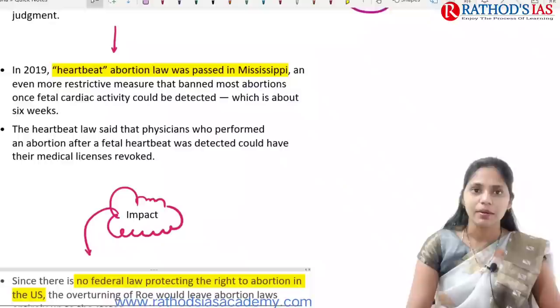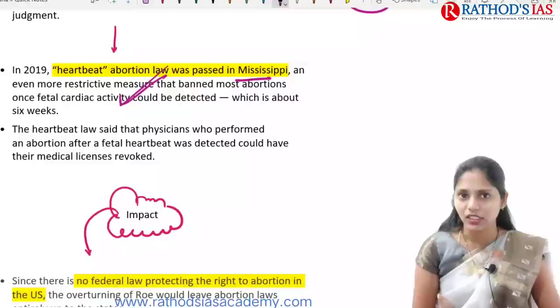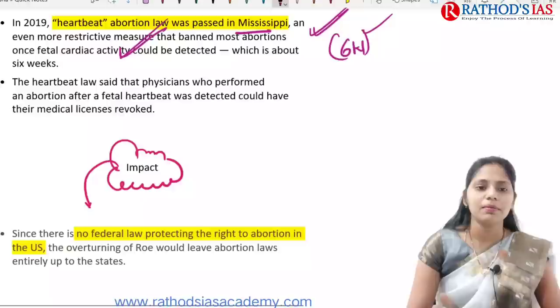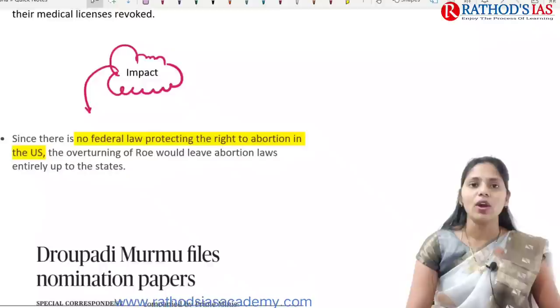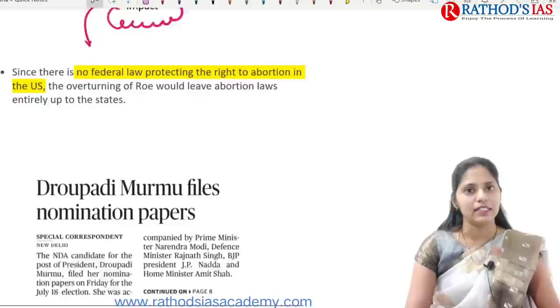In 2019, Mississippi also came up with an update — the heartbeat abortion law — which stated that once the cardiac activity of a fetus is detected, abortion cannot be performed. The fetal heartbeat can be detected from six weeks onwards, that is just one and a half months. The heartbeat law said physicians who performed abortion after fetal heartbeat was detected could have their medical licenses revoked. Since there is no proper federal law protecting the right to abortion, states now have power to come up with their own abortion laws.